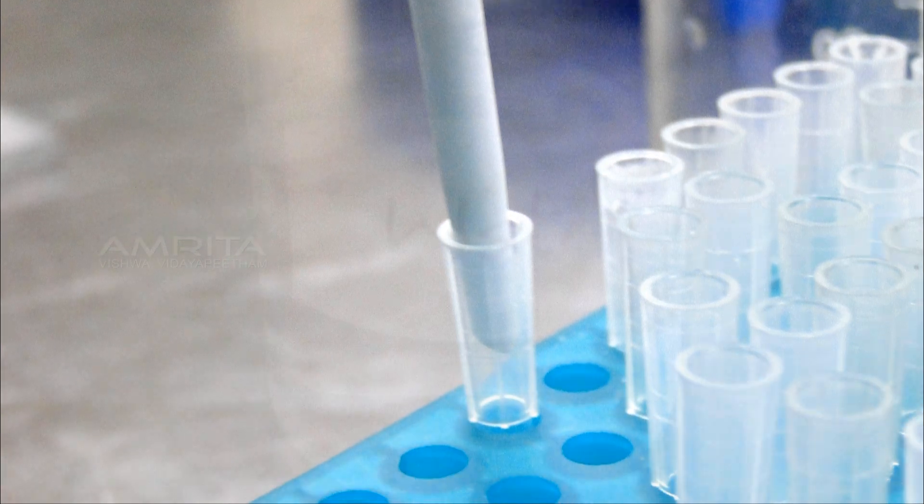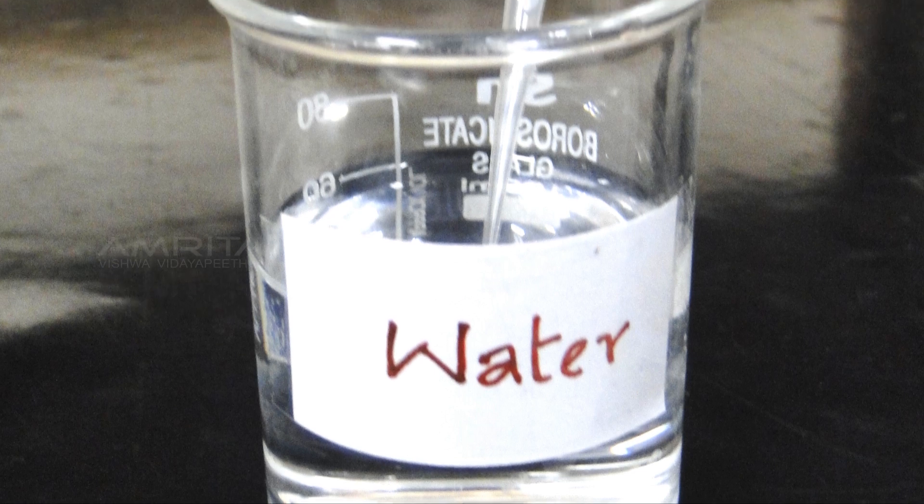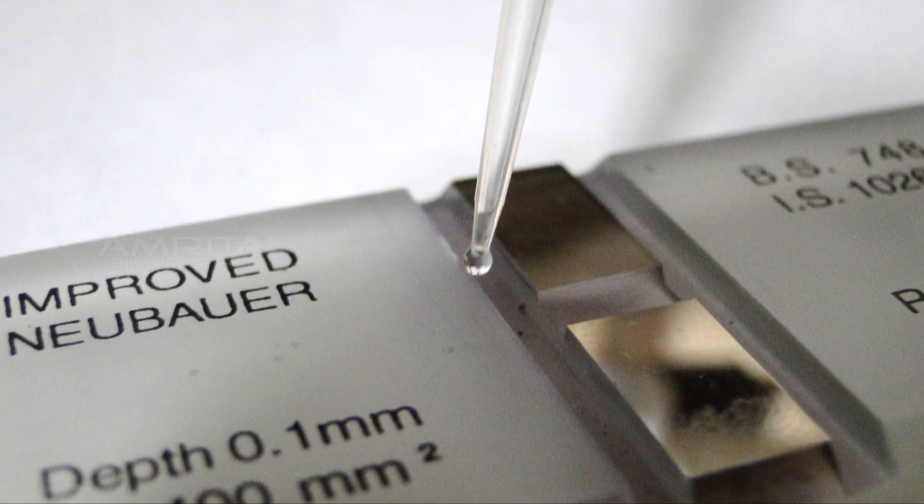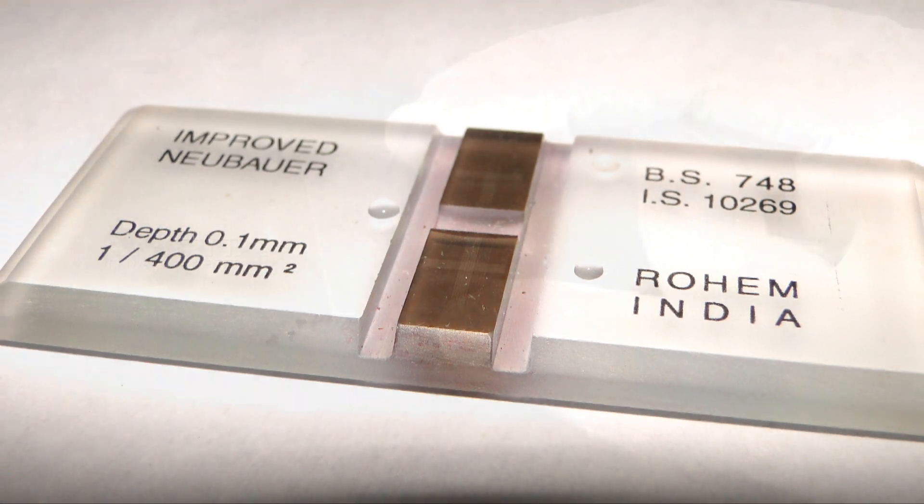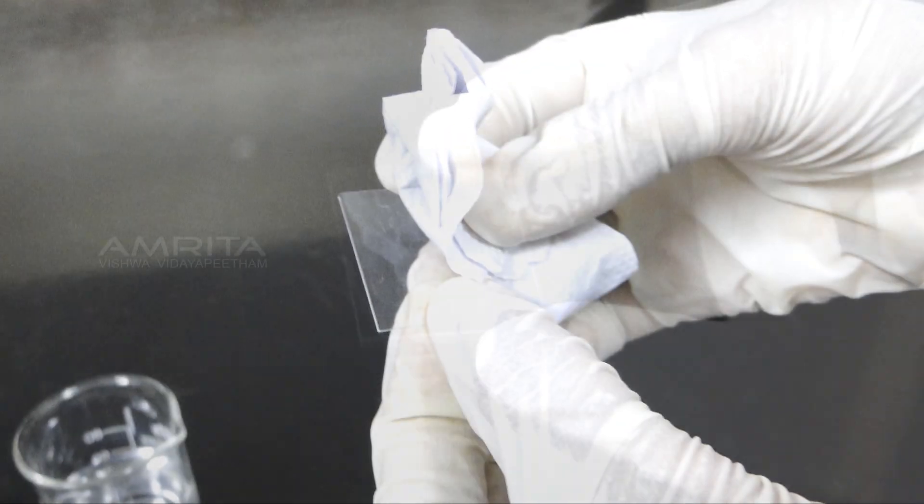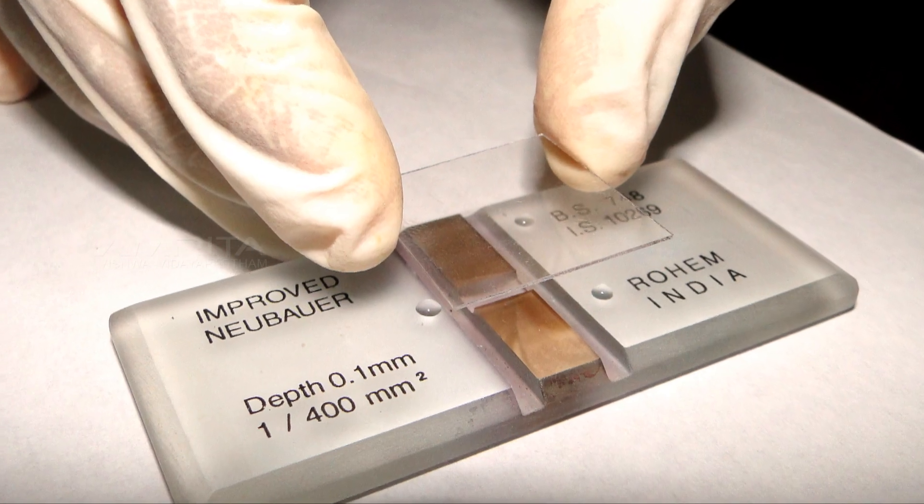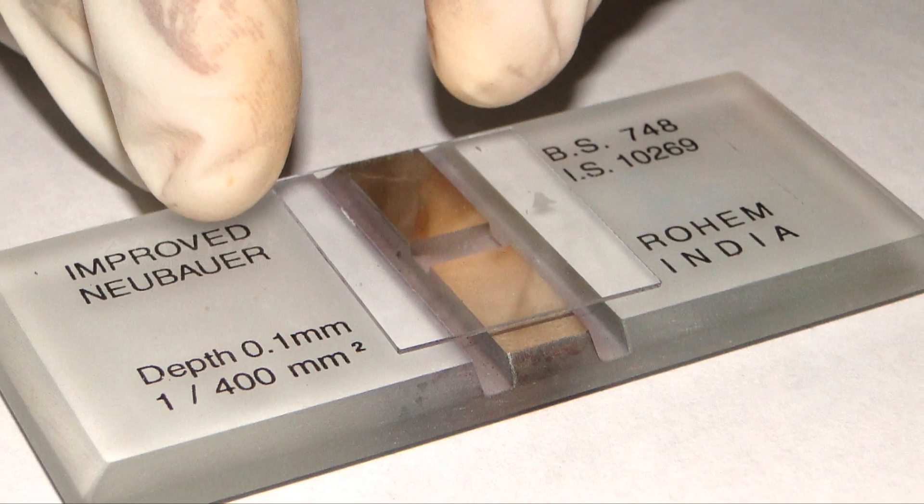Steps followed to prevent the slippage of cover slip: Dip the micro pipette in water and take a small quantity of water. Place a few drops on the surface of the hemocytometer. Take the cover slip, clean it with tissue paper, and place the cover slip on the hemocytometer. Make sure that it does not slide off.